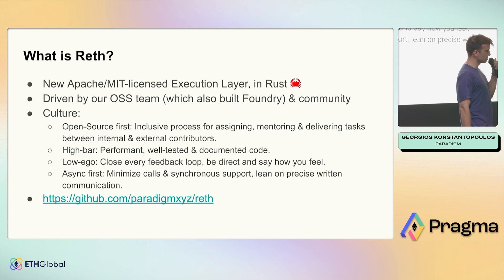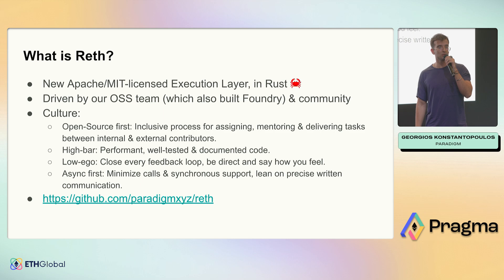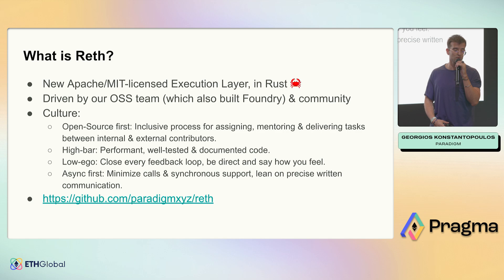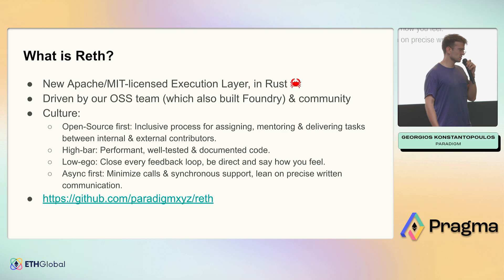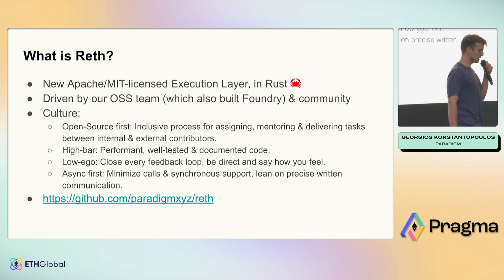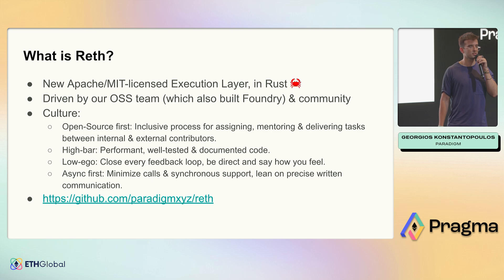So we built a node. Reth is an Apache MIT licensed execution layer. It's an archive node with best-in-class performance characteristics, which we'll get to in a second. And the main thing I want to talk about in this slide is the culture of the team, because the culture is what makes its way into the code.